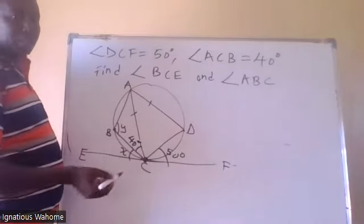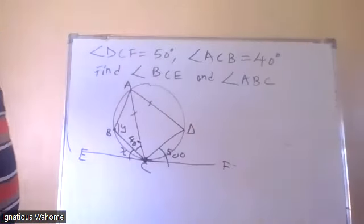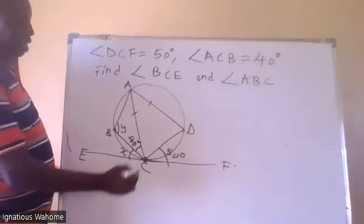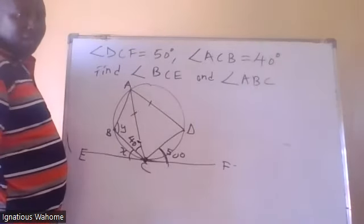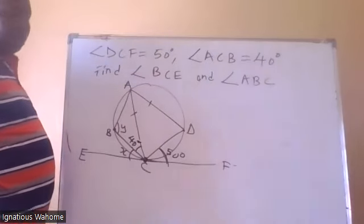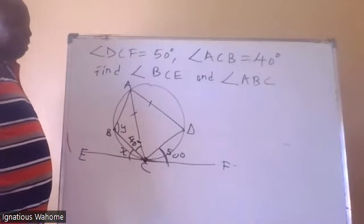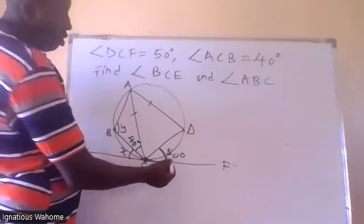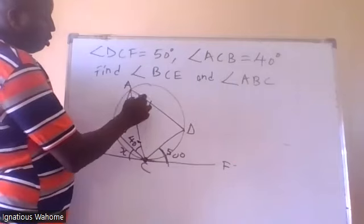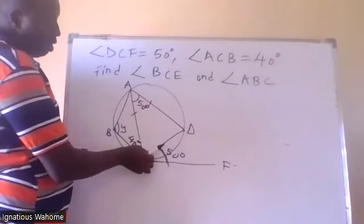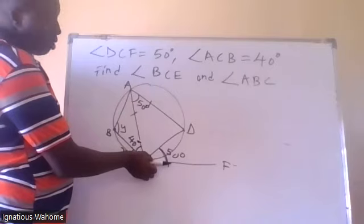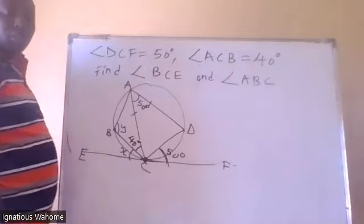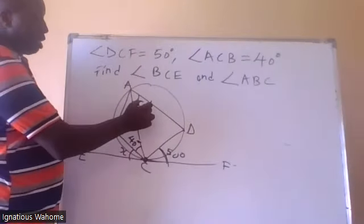We must have another angle which is 50. So if this angle is 50, which other angle is 50? This angle is 50, because the angle a chord makes with the tangent is equal to the angle the same chord subtends in the opposite segment. So this angle is 50 degrees.